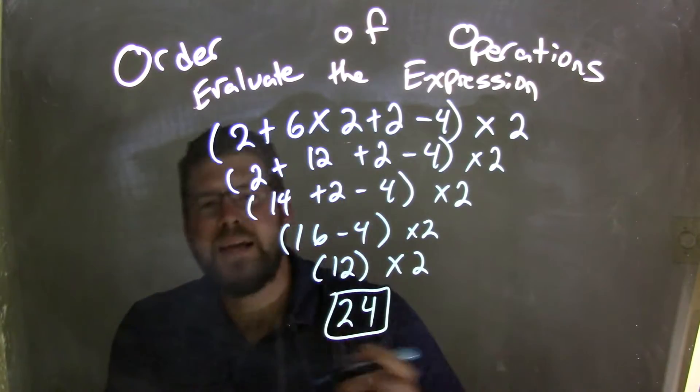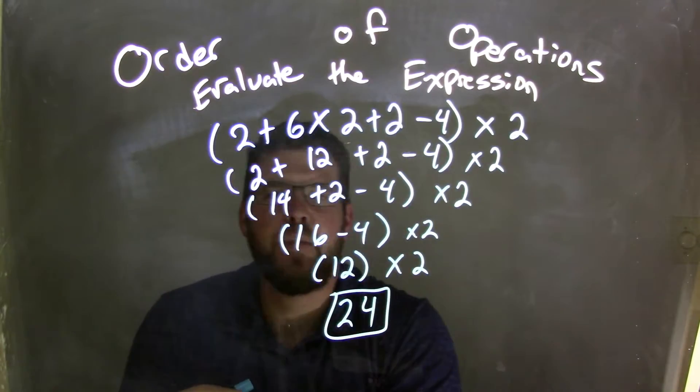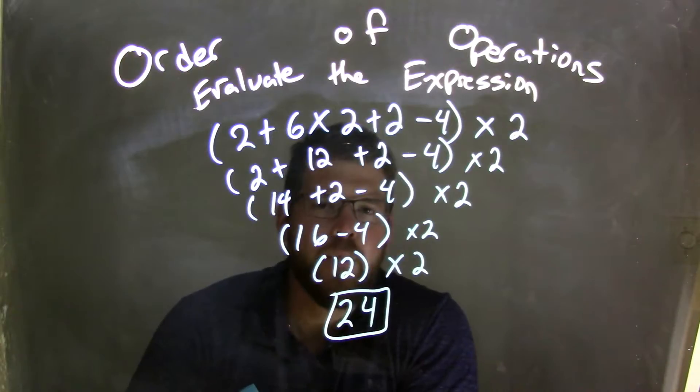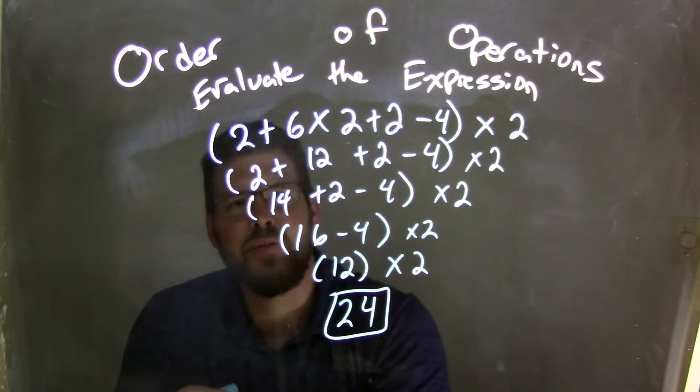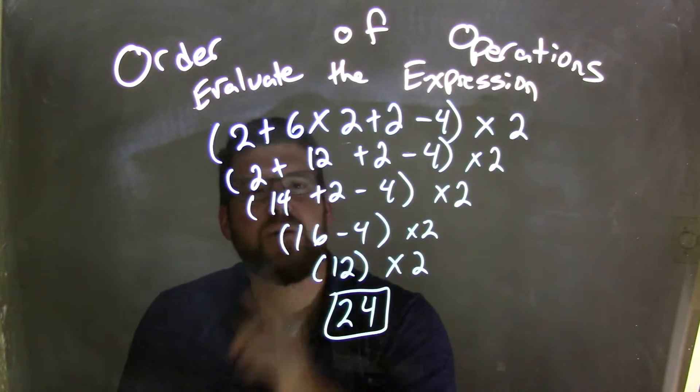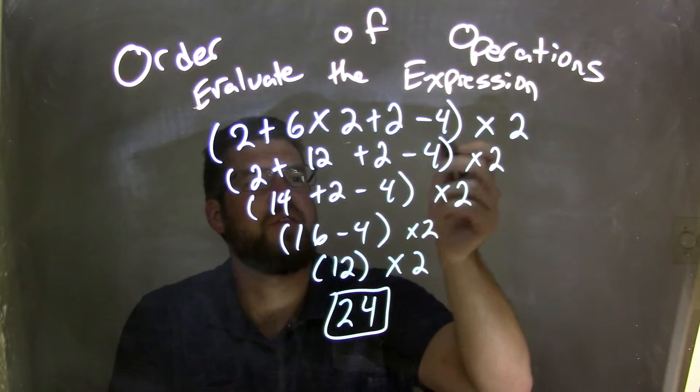So how did we get there? Recap: Parenthesis - we simplify the parenthesis first. The greatest operation in the parenthesis was multiplication. So we took 6 × 2, got 12, and brought down everything else.